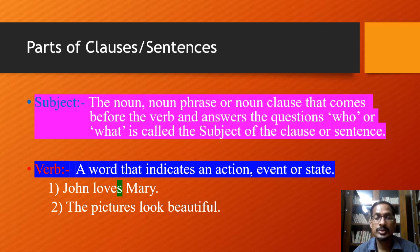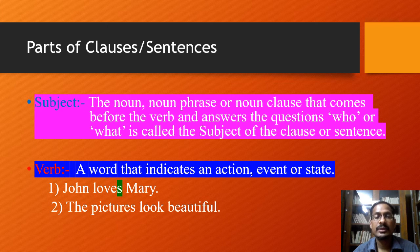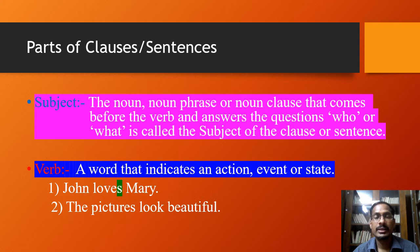The first example is 'Jean loves Mary' and the second is 'The pictures look beautiful.' In the first example, Jean is the subject and 'loves' is the verb. The subject Jean is in third person singular form, and therefore the suffix -s is added to the main verb. So it is not 'love' but 'loves' — Jean loves Mary.